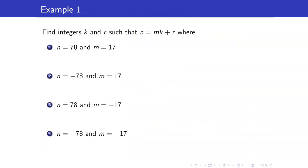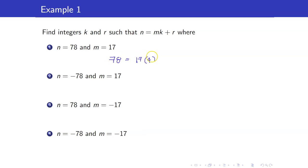Let us have a quick application of the division algorithm. Find integers k and r such that n equals mk plus r, where n equals 78 and m equals 17. For the case where n and m are both positive, all you have to do is divide 78 by 17 to get the quotient and remainder. Therefore, 78 equals 17 times 4 plus 10. What about if n equals negative 78? When you divide negative 78, you will have a negative remainder.